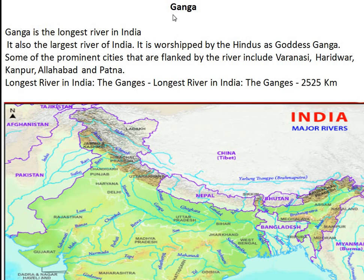First we are going to discuss the Ganga river. It is the longest and largest river in India, worshipped by Hindus as Goddess Ganga. Some prominent cities flanked by the river include Varanasi, Haridwar, Kanpur, Allahabad, and Patna. The Ganga is 2525 kilometers long, which is why it is considered the largest.